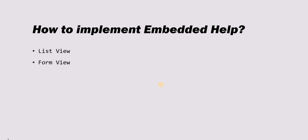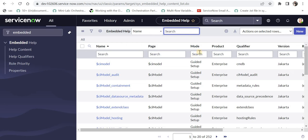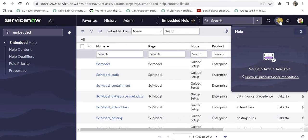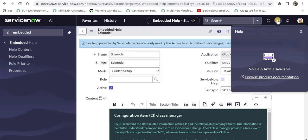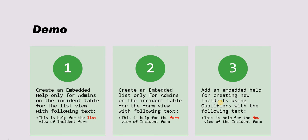You can show embedded help on the list view and the form view. In ServiceNow, on a list view, if you click on 'Show Help' this is how you can search for embedded help if it is available for a specific list or form. In the demo we will be creating embedded help for the list view and form view of the incident form. For the first use case, we will create it for admins only on the list view of the incident table, showing the content: 'This is help for list view of incident form.'